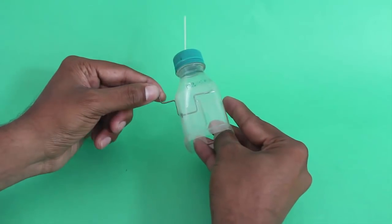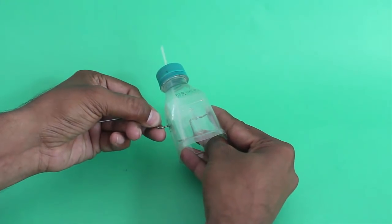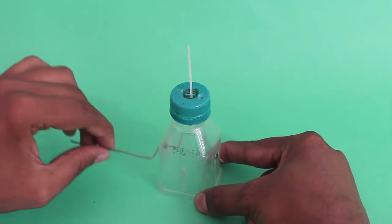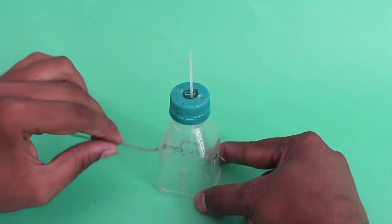On rotating the crank the saw will move up and down. So as you crank the handle the saw is going up and down.